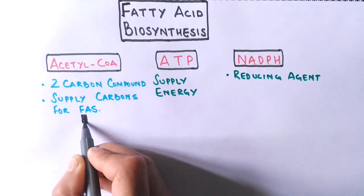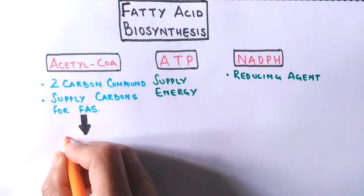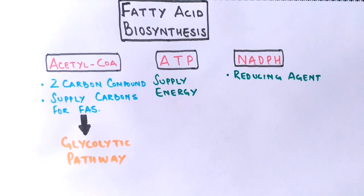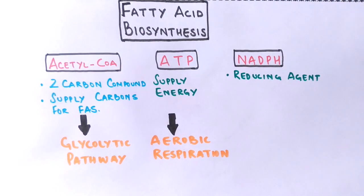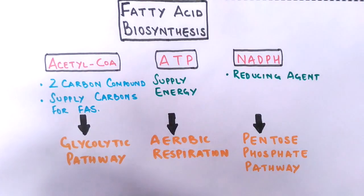All three biochemical reactants have different sources. Acetyl-CoA is from the glycolytic pathway, as we have already discussed. The ATP is from aerobic respiration. And we get this NADPH from the pentose phosphate pathway, its primary source here.